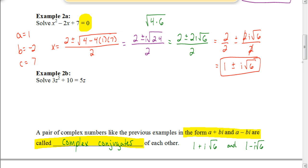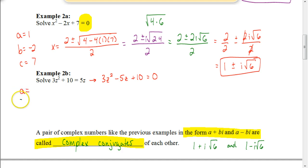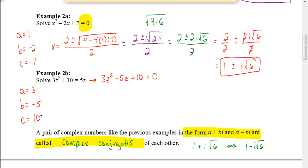Let's have you do this one on your own, but I'll help you get started. Notice that this equation is not equal to 0, so we first subtract 5z from both sides, giving us 3z² minus 5z plus 10 equals 0 in standard form. Now identify your values: a is positive 3, b is negative 5, and c is positive 10.